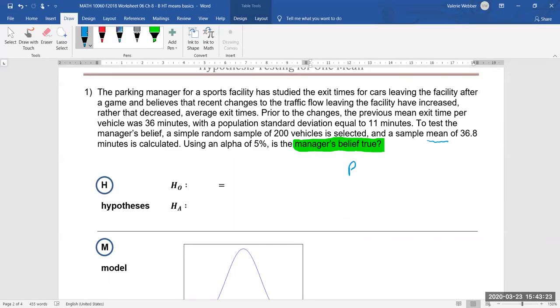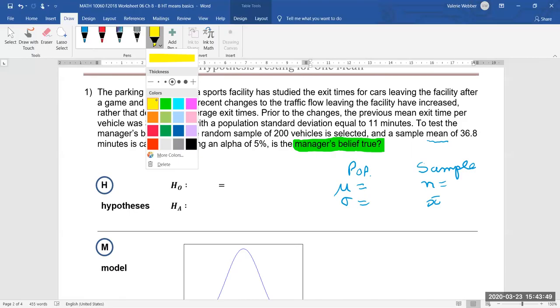So let's put over here I'm just going to put pop for population information and sample for sample information. Okay so we're going to need a mu, we're going to need a sigma, we're going to need an n and we're going to need an x bar and if we walk through the question again I'll try and highlight this. Let's take a look for the current population information.